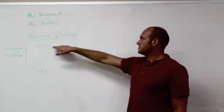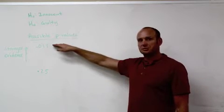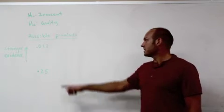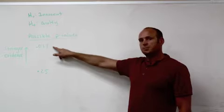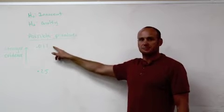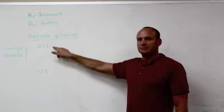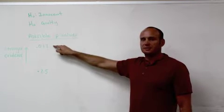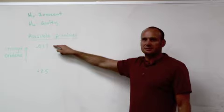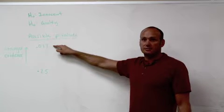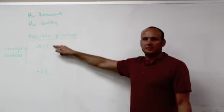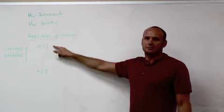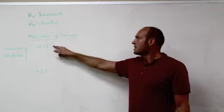For example, you might compute a p-value of .013 or maybe one of .25. A p-value of .013 means there's a 1.3% chance you would make this observation if the person were in fact innocent, which means it's very unlikely that you would have all this evidence if the person was innocent, which should lead us to conclude that most likely they are not innocent, therefore they must be guilty.